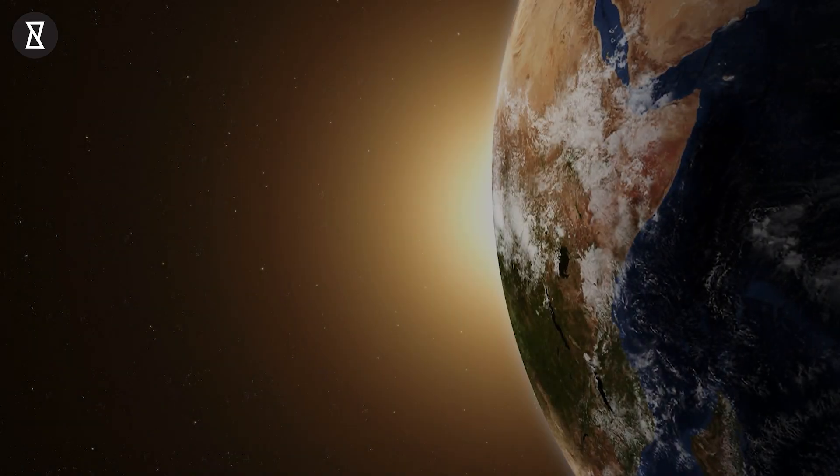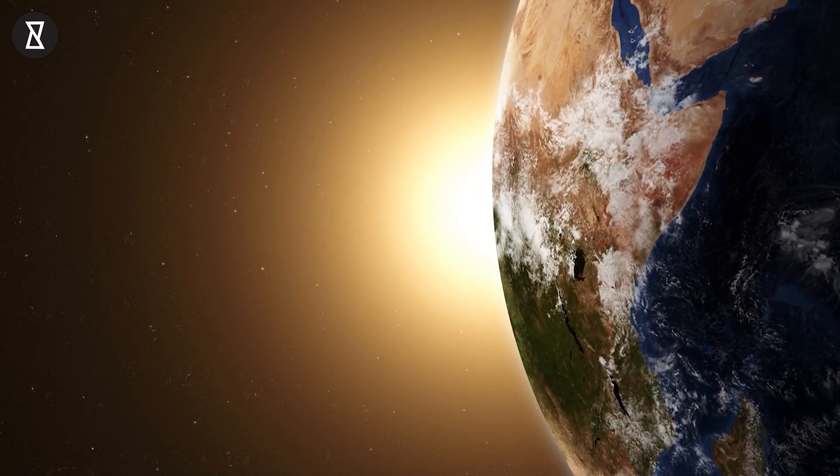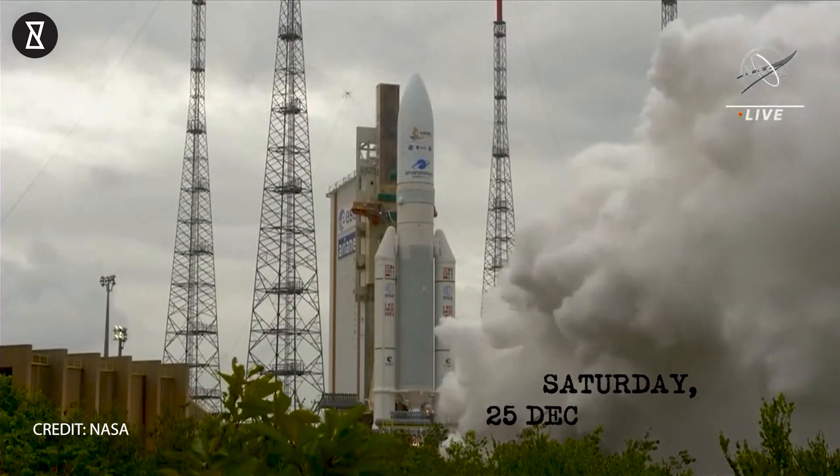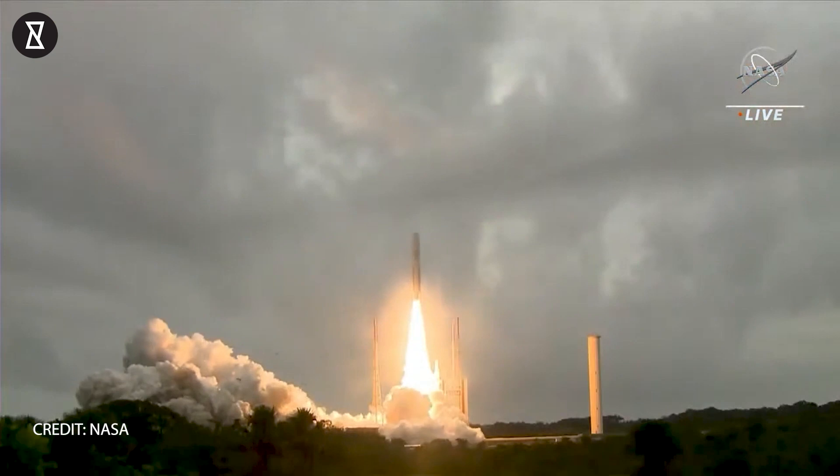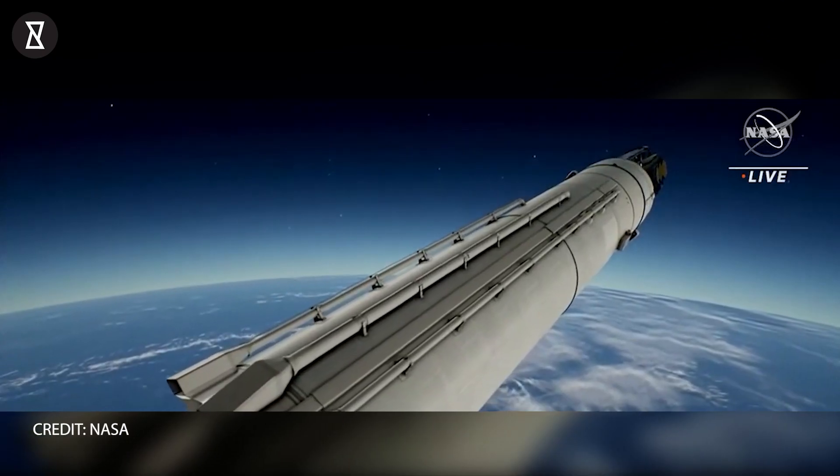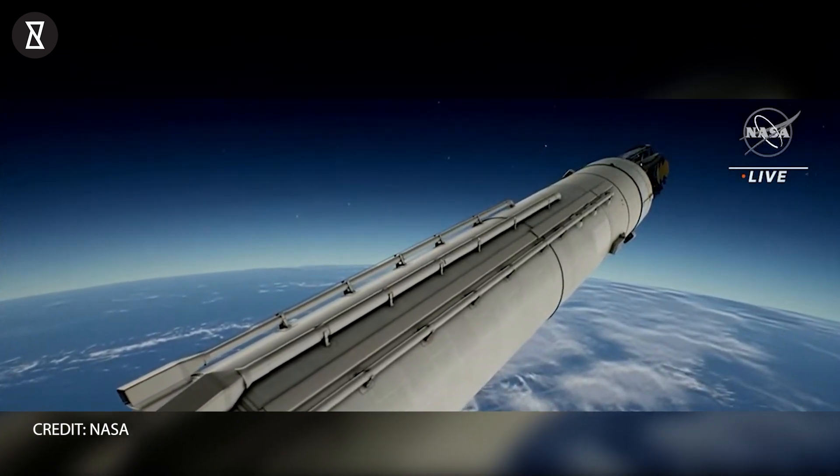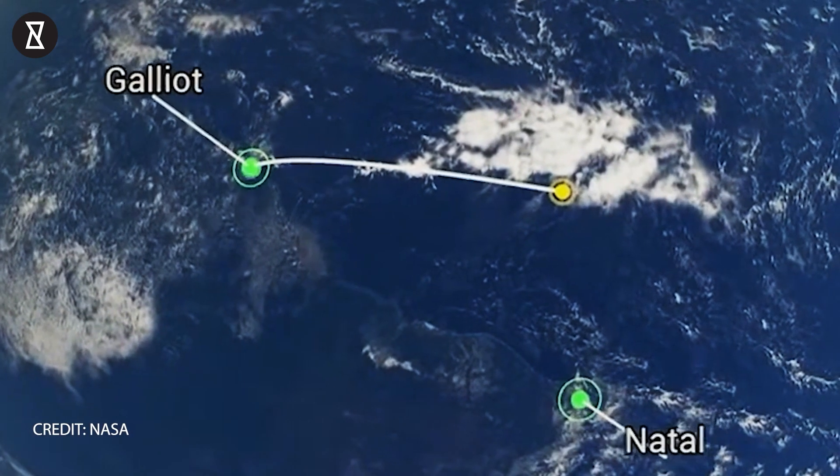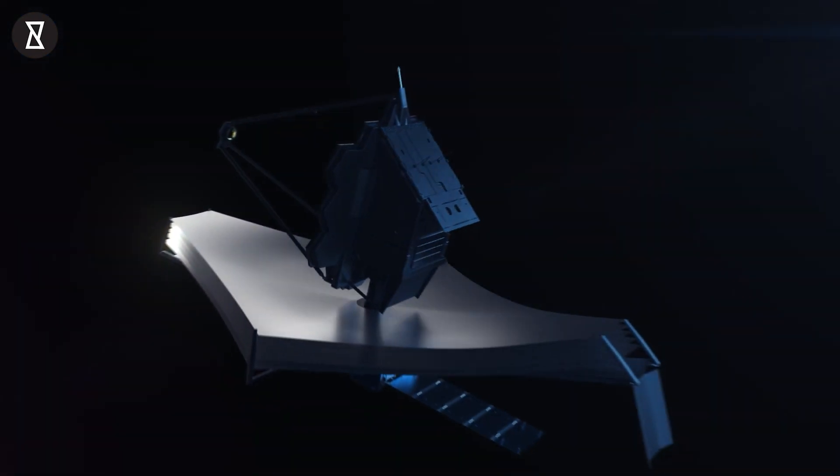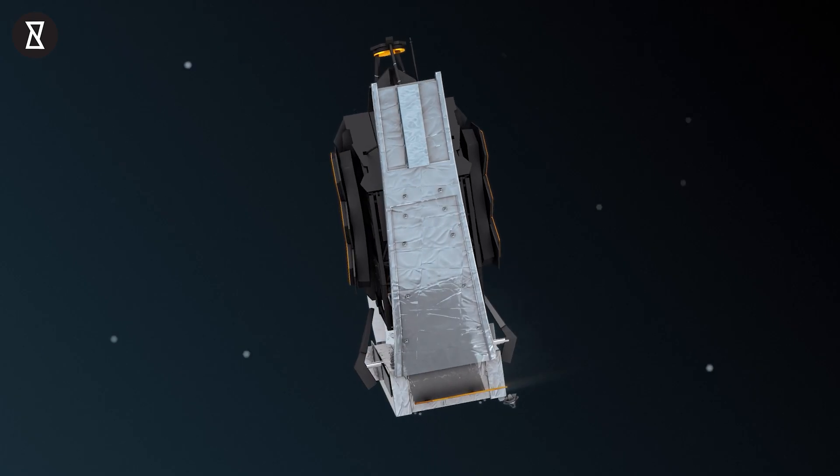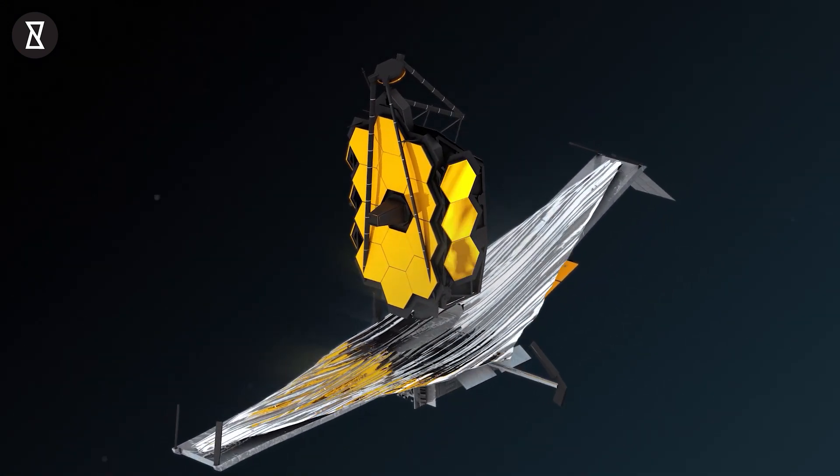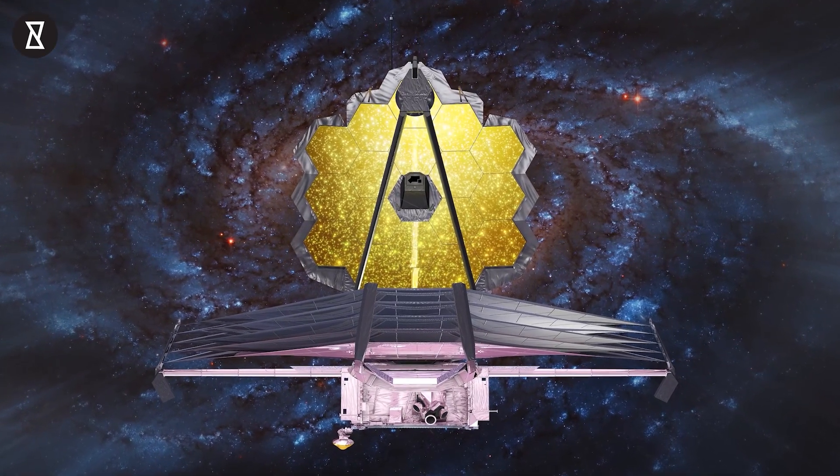2021 ended on a great note. On Christmas morning of 2021, an Ariane 5 rocket blasted off from Kourou, French Guiana. It carried with it the largest and most sophisticated space telescope ever built, the James Webb Space Telescope. Since then, JWST has reached its orbit about 1 million miles from Earth, unfurled its tennis court-sized sunshield, and aligned its 18 hexagonal mirror segments.